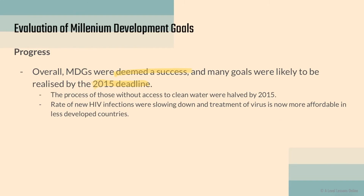In 2012 they revised the whole framework, but many goals were on track for 2015. For example, the proportion of those without access to clean water was actually halved by 2015. Additionally, the rate of new HIV infections was slowing down, and treatment was becoming more affordable in less developed countries. These are two examples of goals that had almost succeeded.